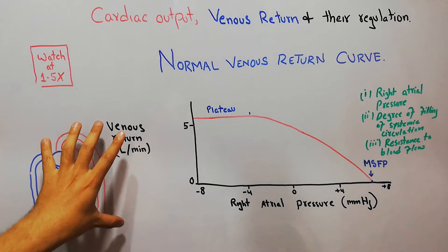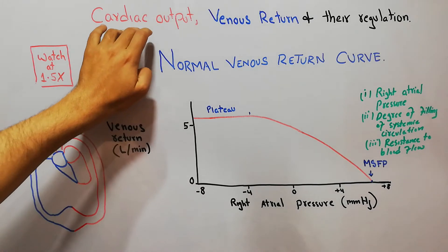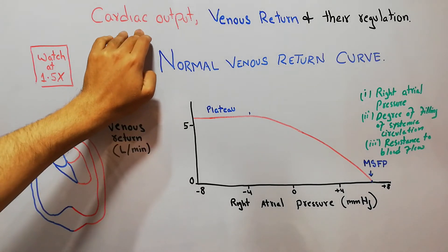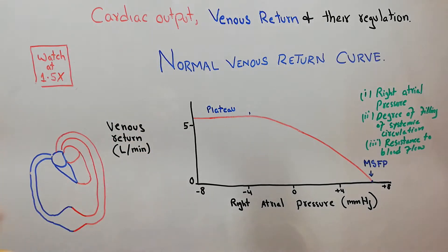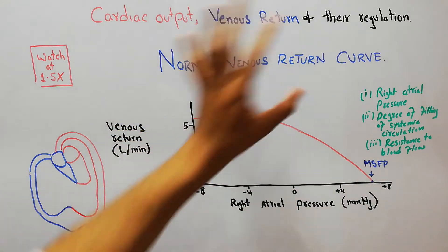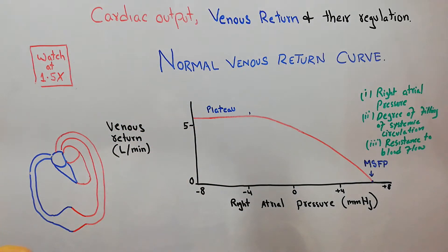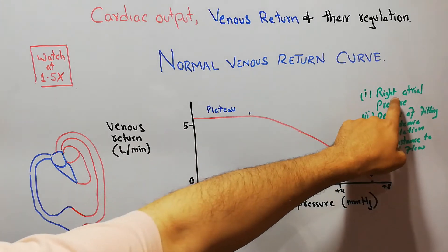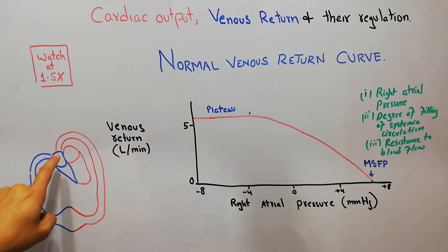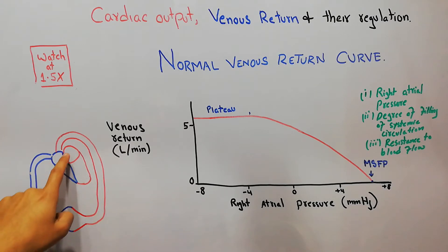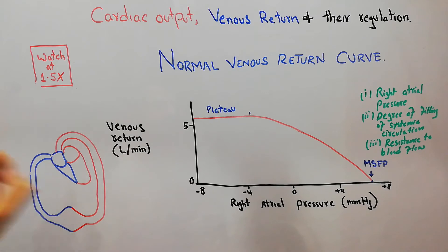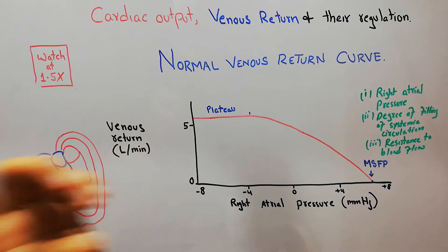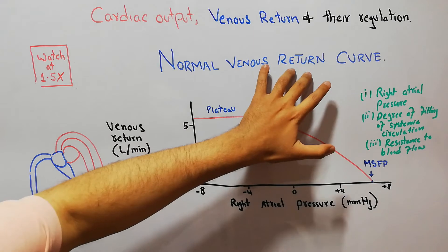A lot of factors affect the cardiac output, and similarly a lot of factors affect the venous return. The three most important determinants of venous return are: first, right atrial pressure — the pressure at the right atrium. Here we have the heart with the right atrium, right ventricle, left atrium, and left ventricle. So pressure at the right atrium is one parameter which affects the venous return.